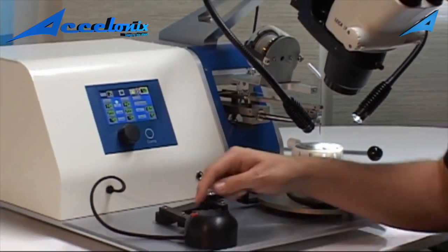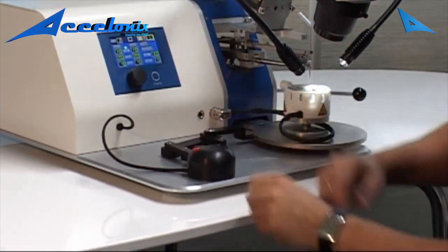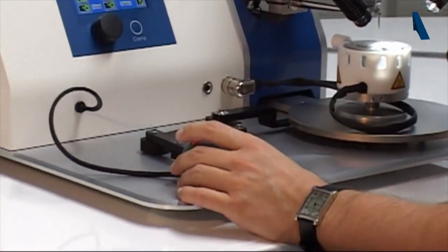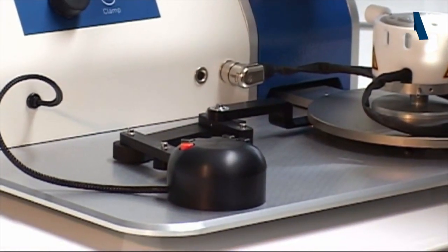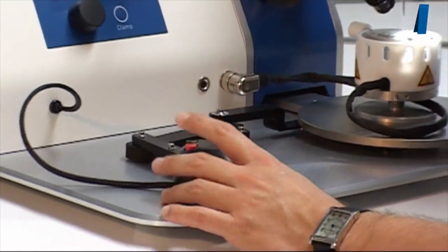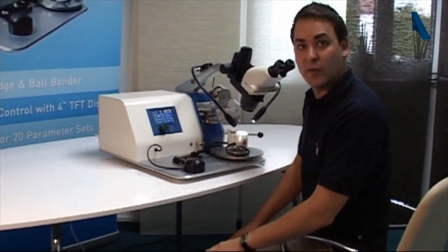On the puck you find four different buttons. So the first button is a reset button. That means if the first bond didn't stick and you don't want to perform the second bond, you just press this button and the machine will restart at bond number one.